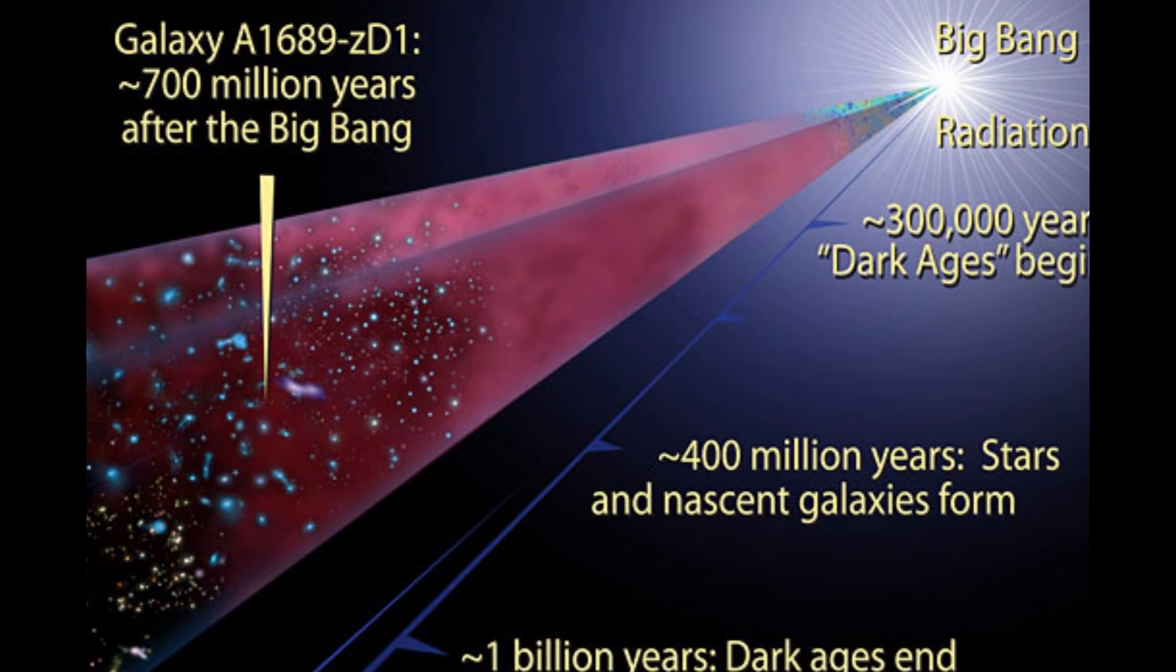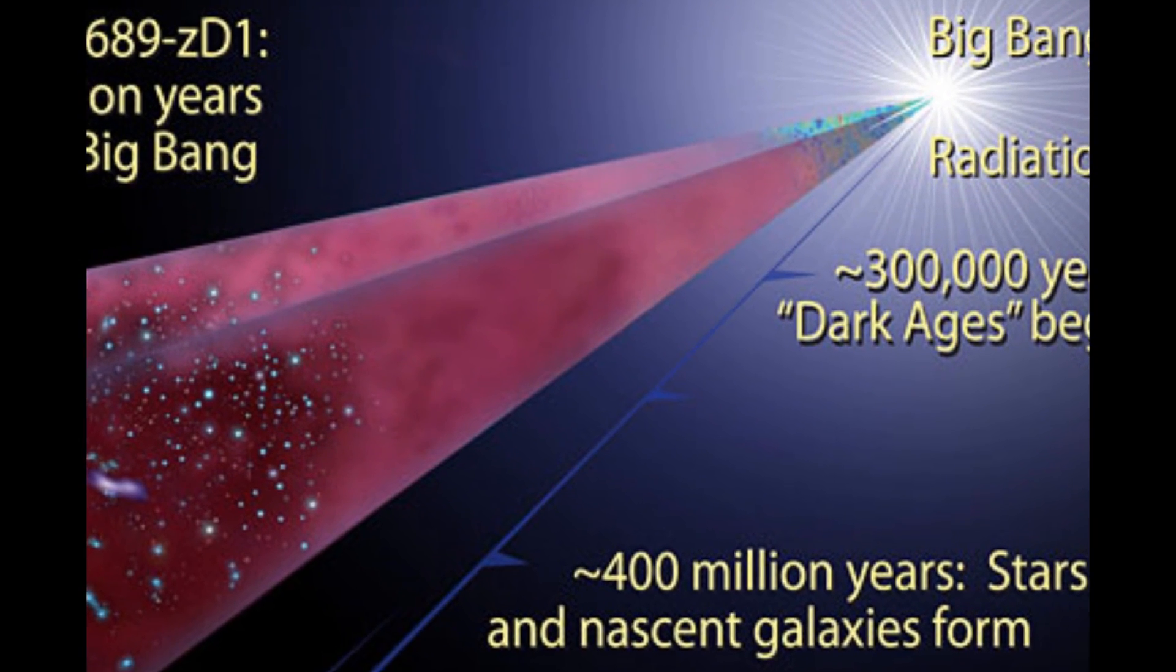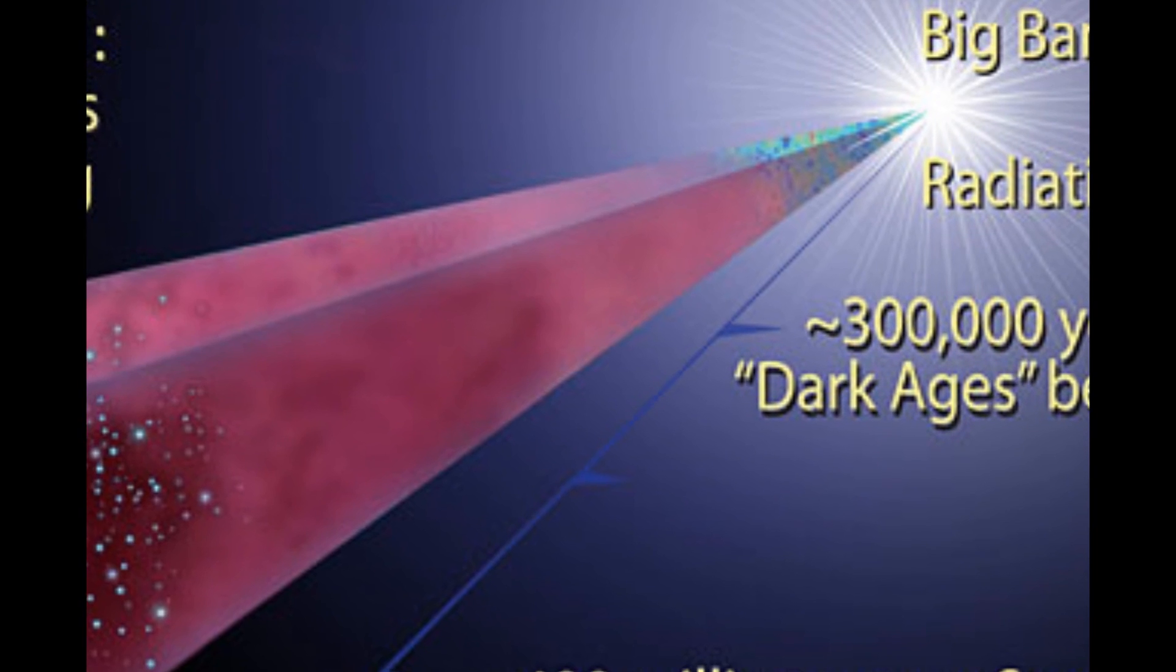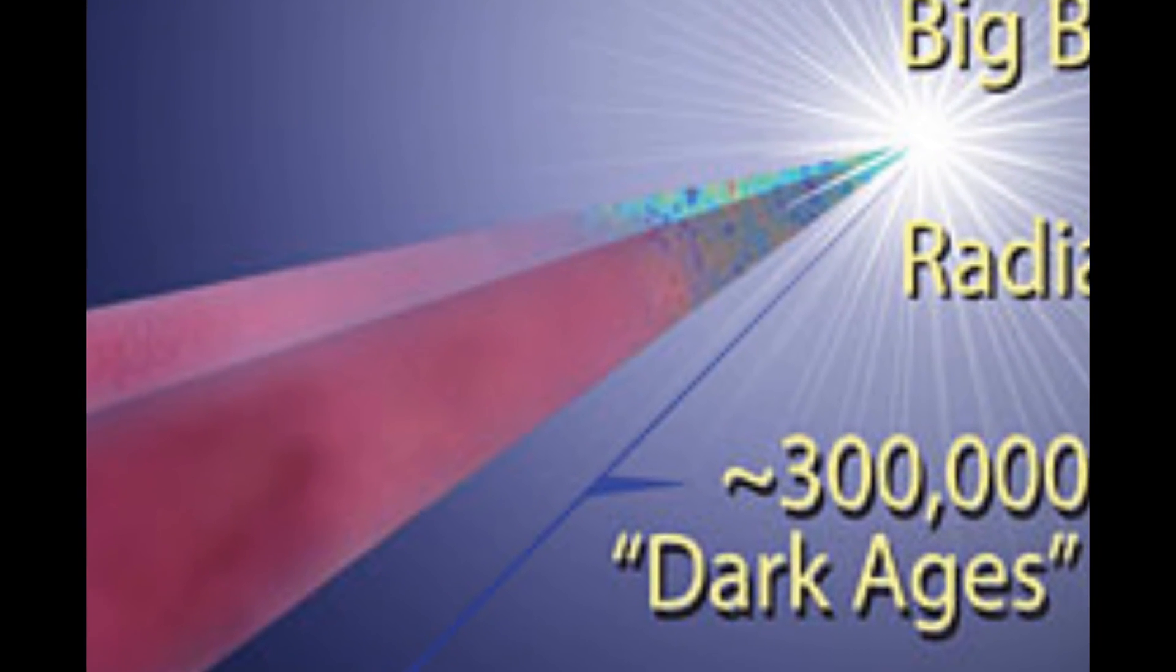So the Big Bang produced hydrogen, helium, and lithium. But where did all of the other elements come from? Well, that's where stars come into the narrative, and I'll leave that for a later video.